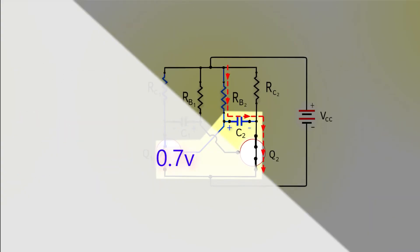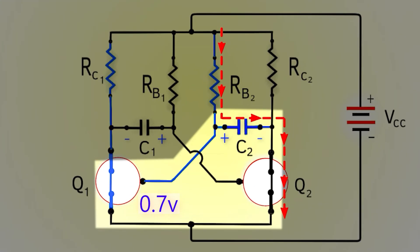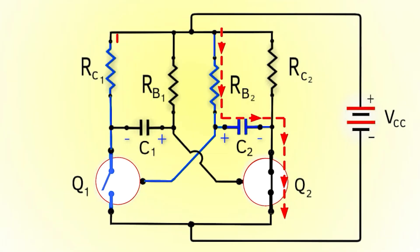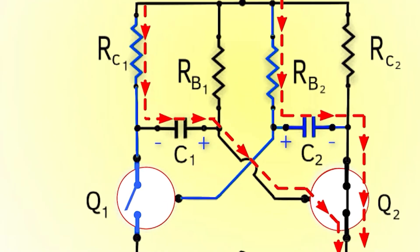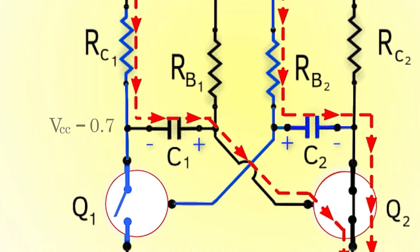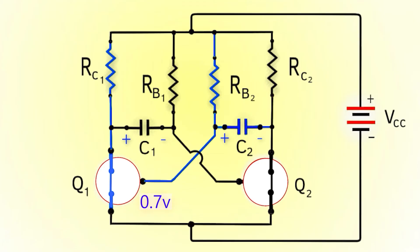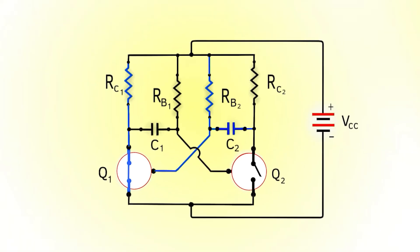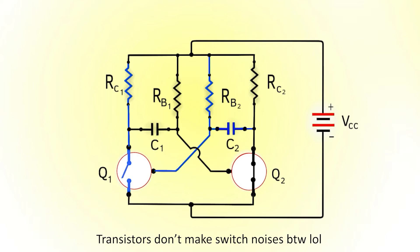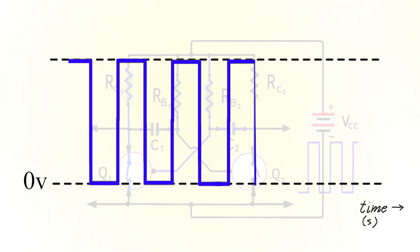The voltage across capacitor C2 increases towards VCC, and as it reaches 0.7V, transistor Q1 turns on. While that was happening, C1 charged in this path up to VCC minus 0.7V, much faster than C2 due to low collector resistance. As Q1 turns on, the high negative voltage of C1 immediately turns Q2 off. The state has changed again — Q1 is on, Q2 is off. We have returned to the beginning state of the circuit, and the same process gets repeated again and again. That's how we get a square wave output between collector and emitter of each transistor, oscillating between 0V and VCC.